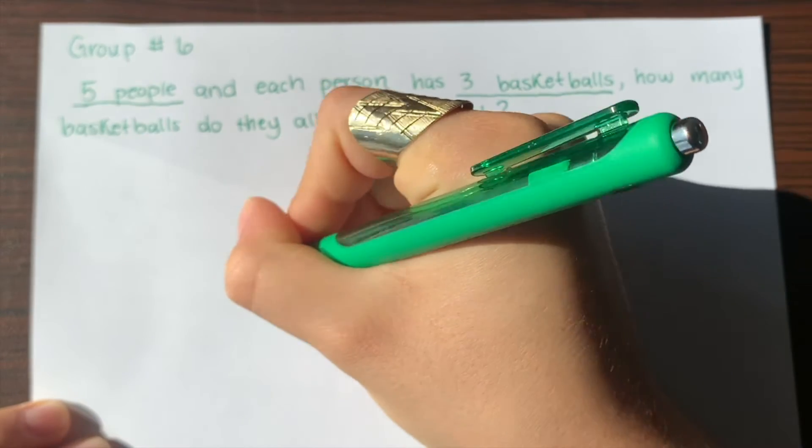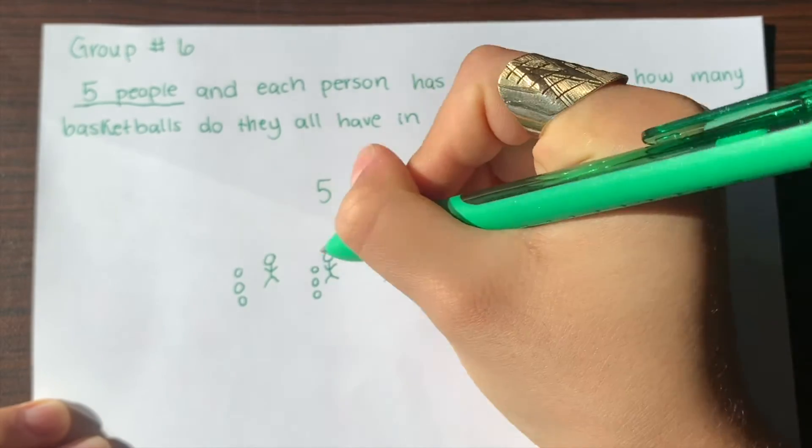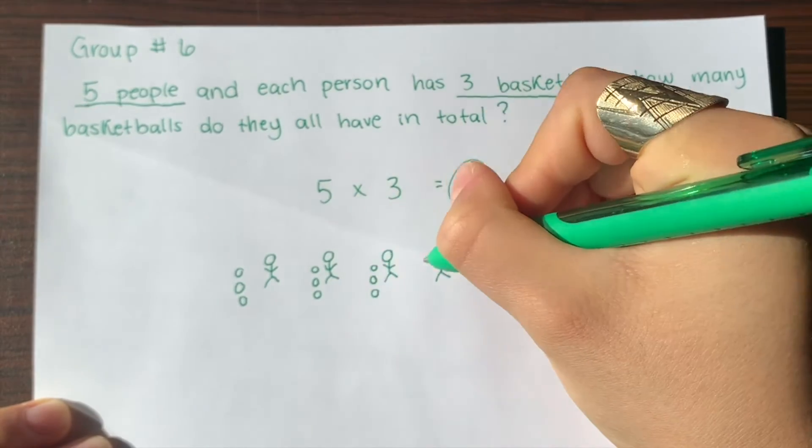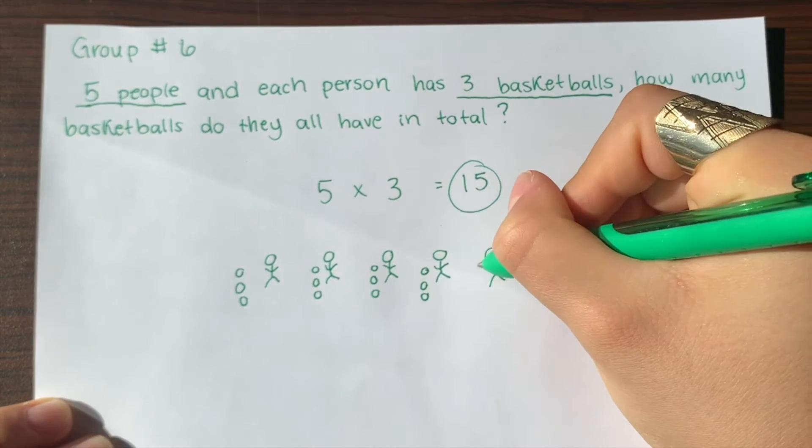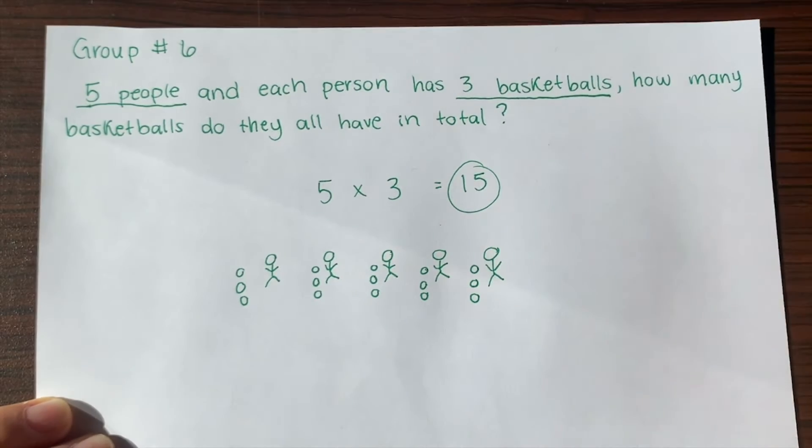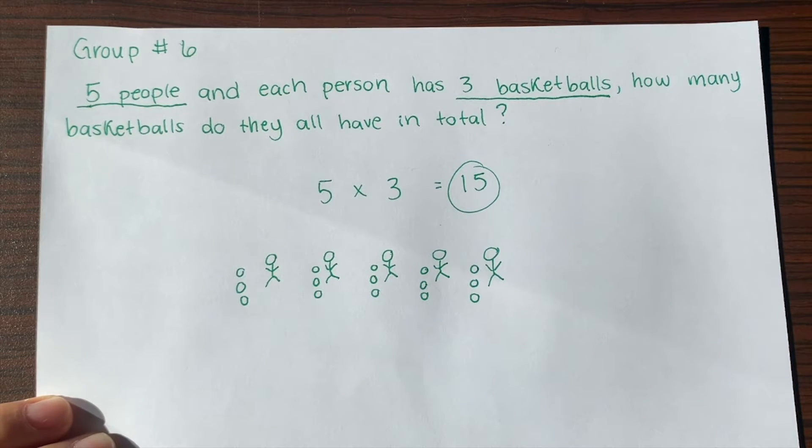Each one has three basketballs. So we're going to draw three basketballs right next to them because each person has three basketballs. So there we go. Now each person has three basketballs. Now you can actually go through and just count the basketballs in total to get your answer.